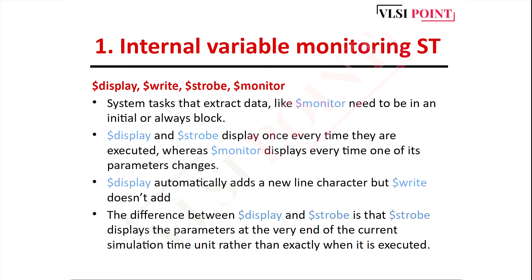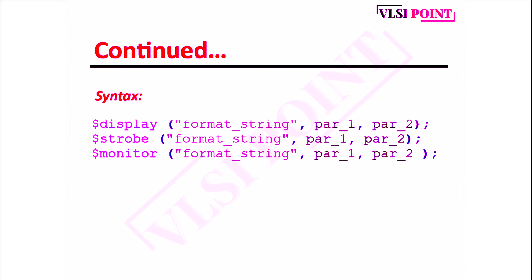Both $display and $write represent the current value of variables. $strobe displays simulation data at a selected time — specifically at the end of the current simulation time, when all simulation events have occurred. $monitor is mainly used for monitoring: each time a variable or expression in the argument list changes value, the entire argument list is displayed at the end of the time step. The syntax for all four — $display, $write, $strobe, $monitor — is the same: in double quotes you write the string format, then after a comma you write the parameters you want to print.